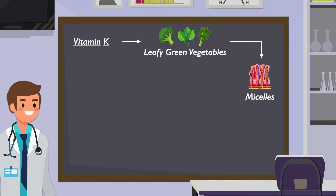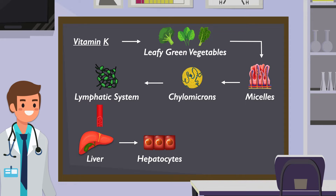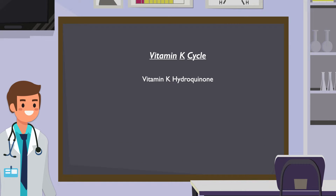Vitamin K is absorbed as part of micelles in the small intestine. It's then packaged in chylomicrons and enters the lymphatic system. Once it reaches the bloodstream, most of it ends up in the liver and is taken up by the hepatocytes. This is where the vitamin K cycle takes place, at least as it relates to blood clotting. The vitamin K cycle begins with a reduced form of vitamin K called vitamin K-hydroquinone.